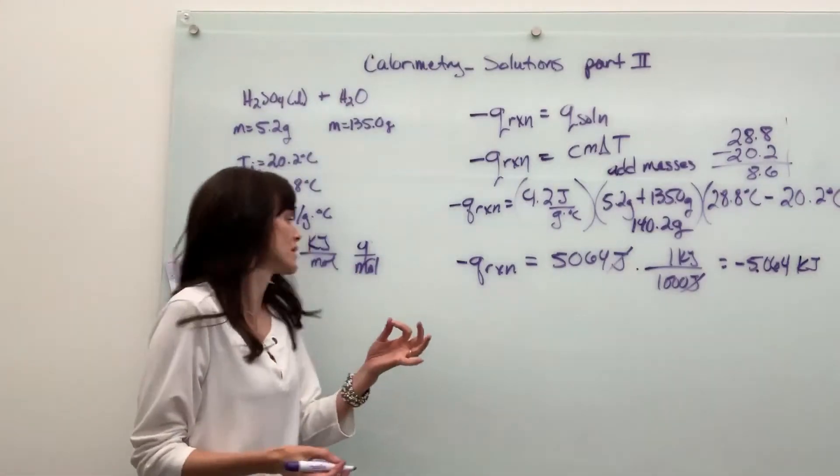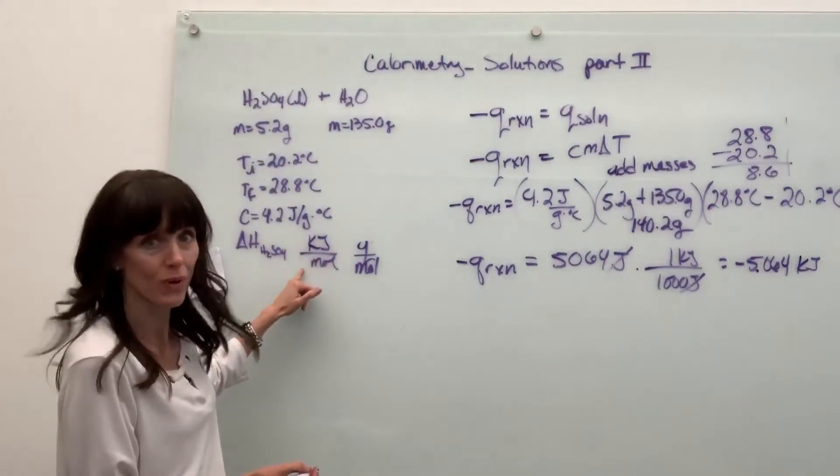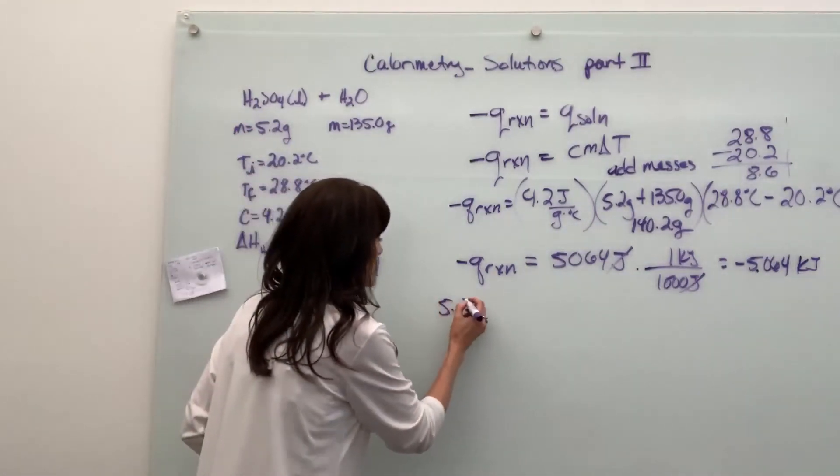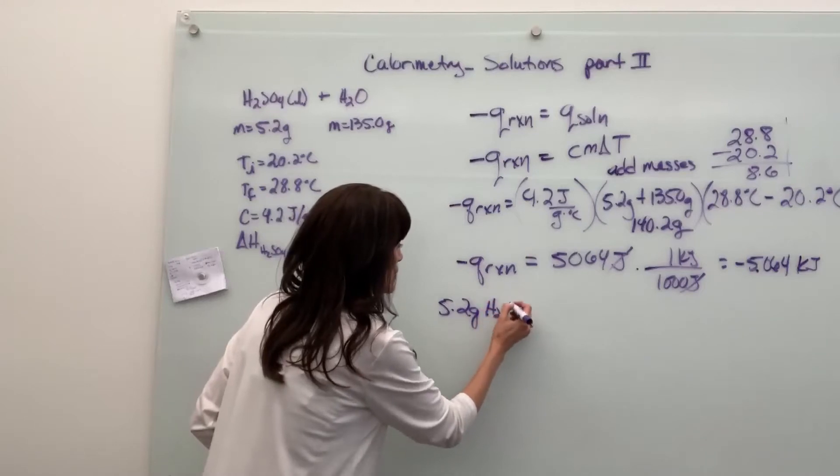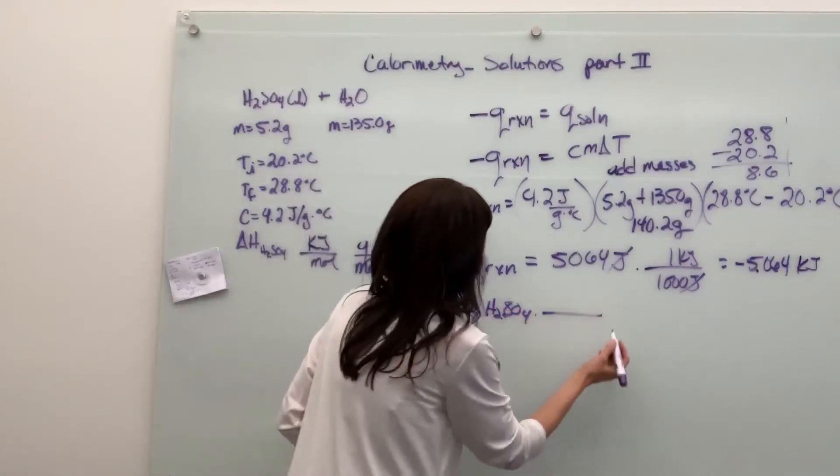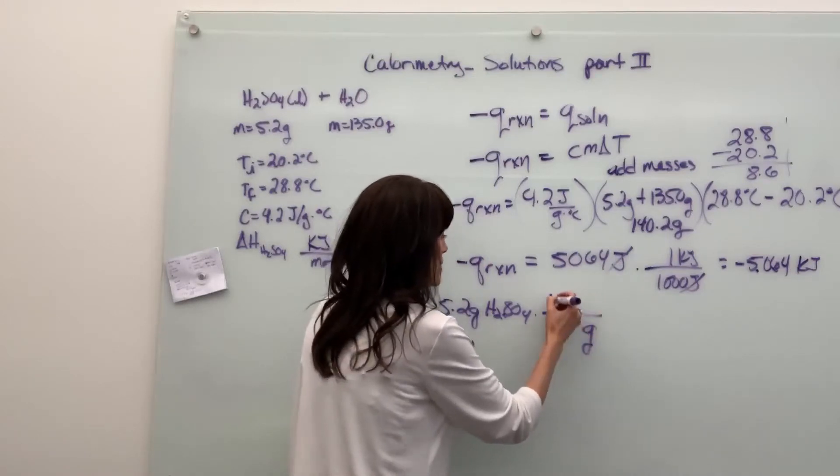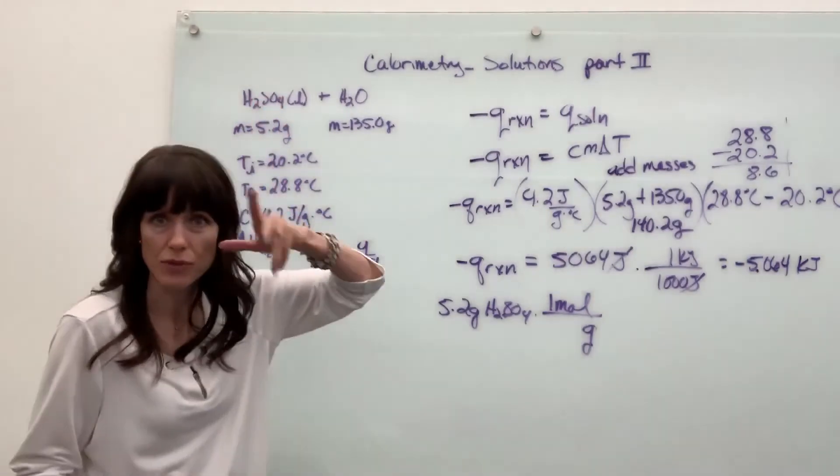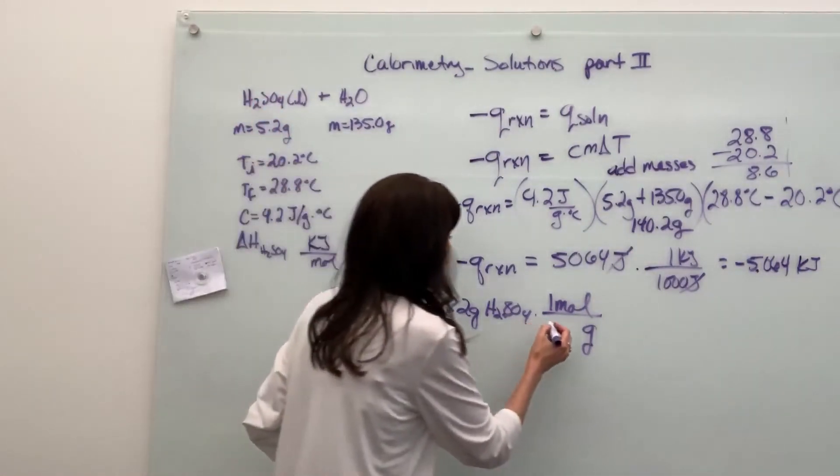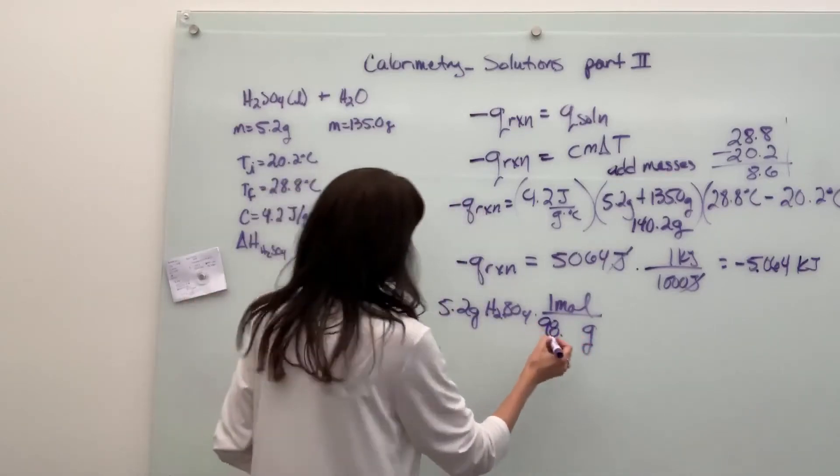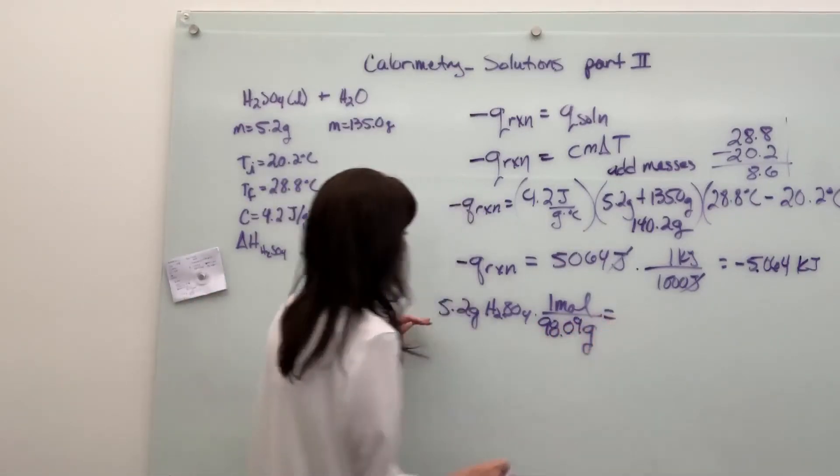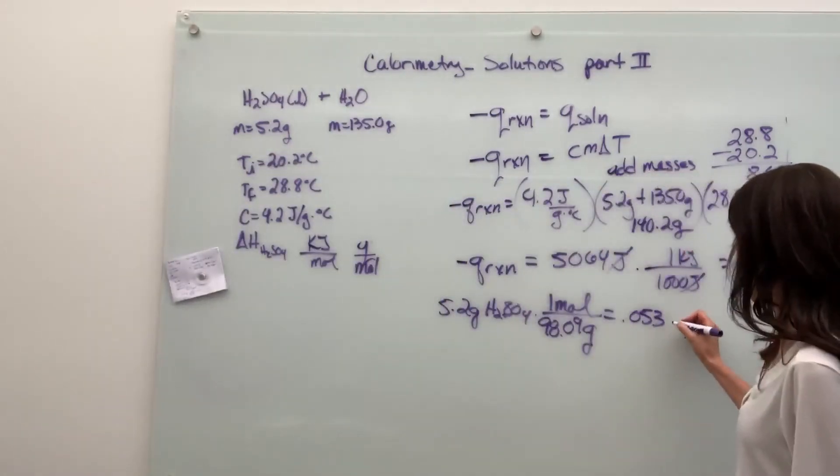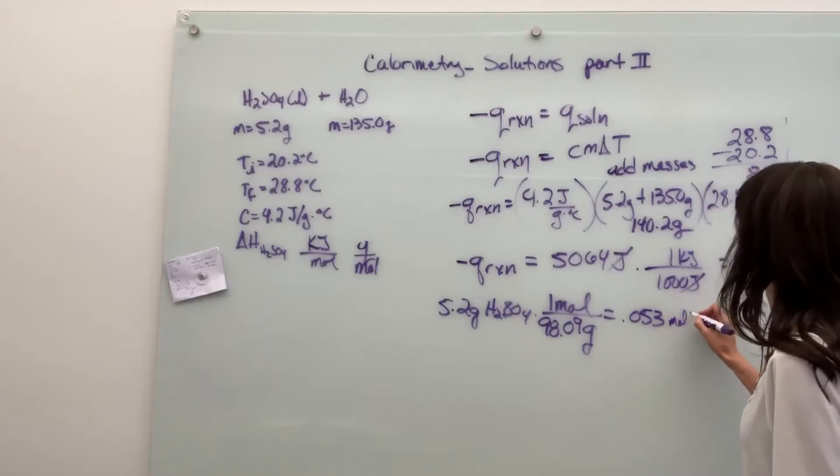Now we have to find the moles. Kilojoules per mole. And they wanted it for sulfuric acid. So I'm going to take 5.2 grams sulfuric acid. We'll have grams of sulfuric acid on the bottom and one mole. I did the molar mass on this. So two hydrogens, one sulfur, four oxygens. The molar mass is 98.09 grams. So if we divide this, we are going to get 0.053 moles of sulfuric acid.